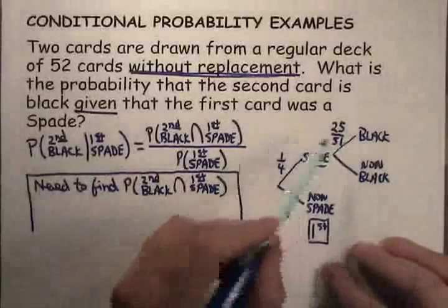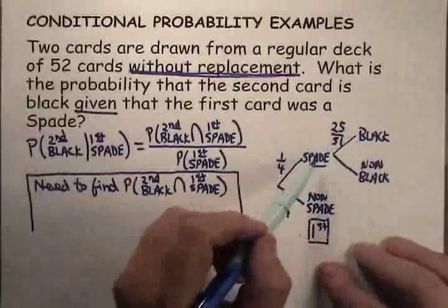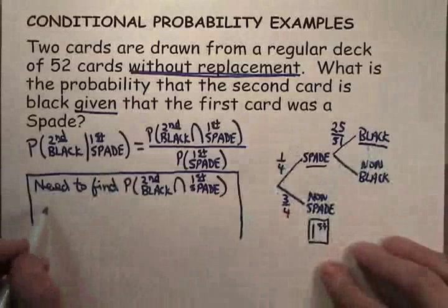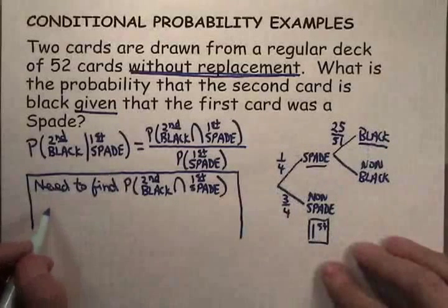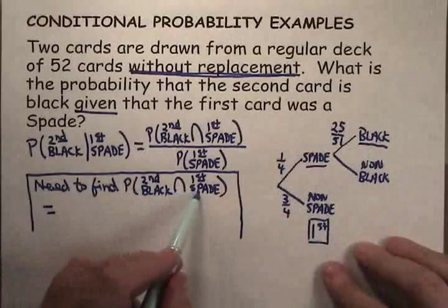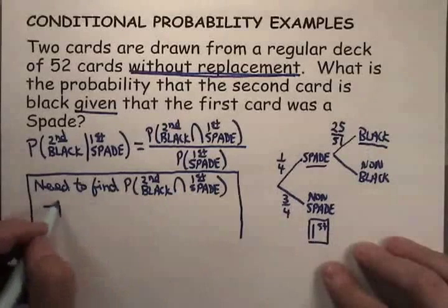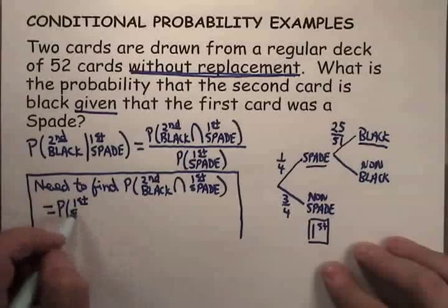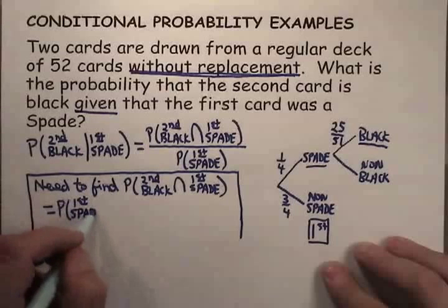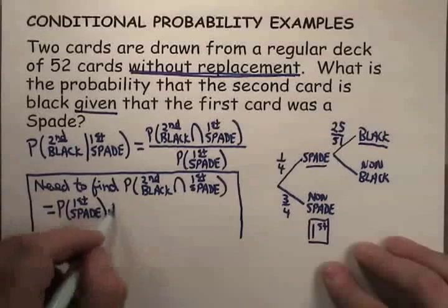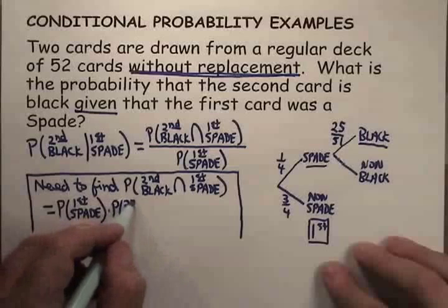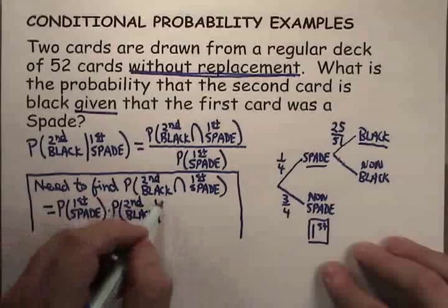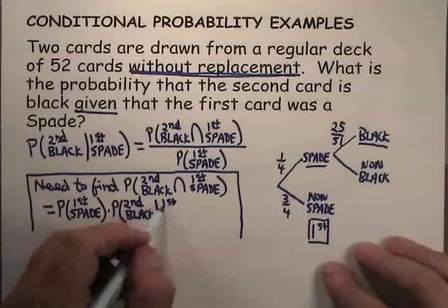So the probability of getting a black after having drawn a spade is 25 over 51. Looking back at this, the probability of getting the second black and the first a spade is simply the probability that the first one was a spade times the probability that the second one is black given that the first one was a spade.